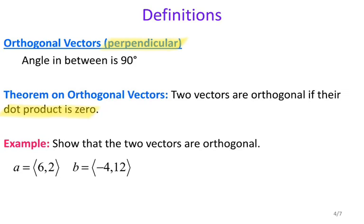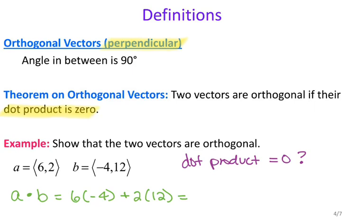For this example, it says show that two vectors are orthogonal. Essentially, what I want to do is I want to check to see if the dot product equals zero. And if it does equal zero, then that means they are orthogonal. So I'm going to go ahead and take the dot product of our two vectors. So A dot B equals A1 times B1. So six times negative four plus A2 times B2. So two times 12. That gives me negative 24 plus 24, which is zero. So sure enough, these two vectors are orthogonal because the dot product equals zero.